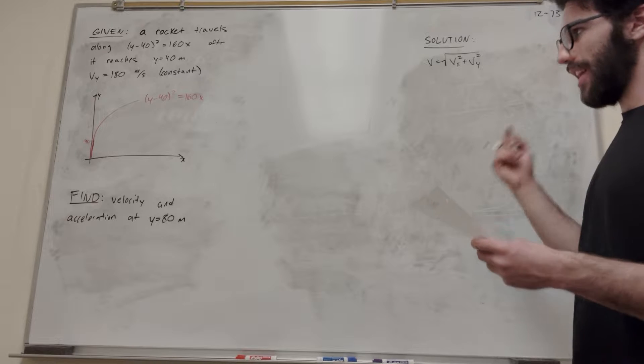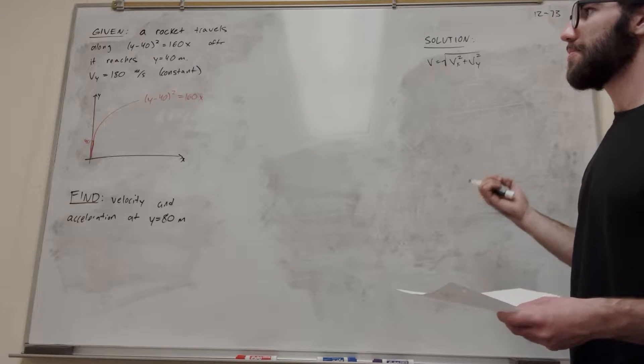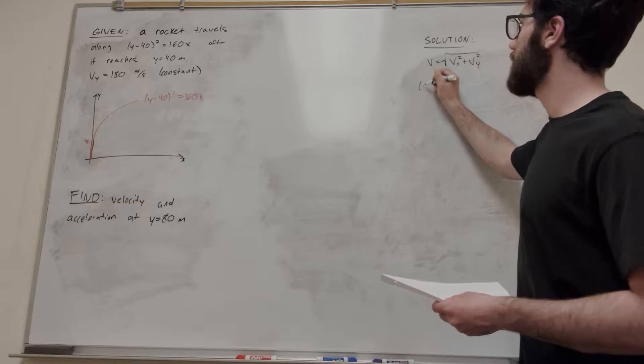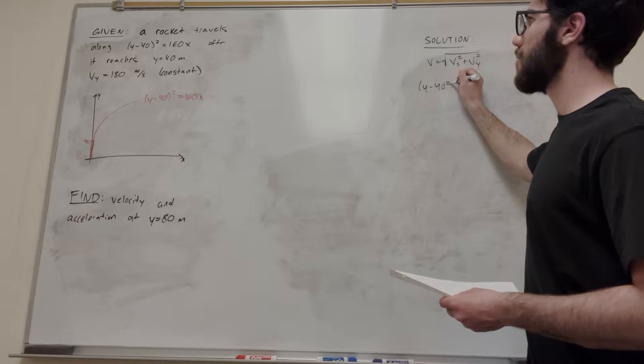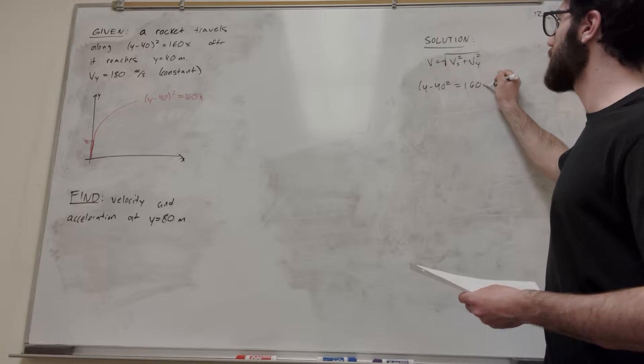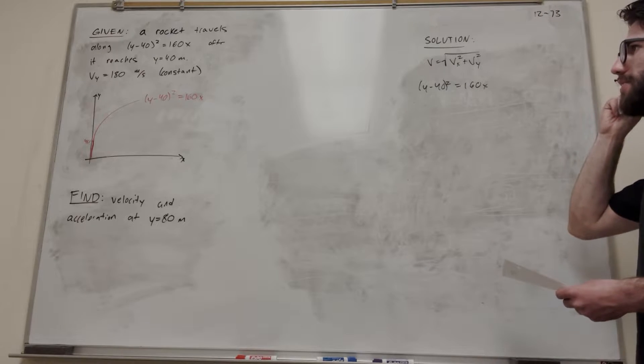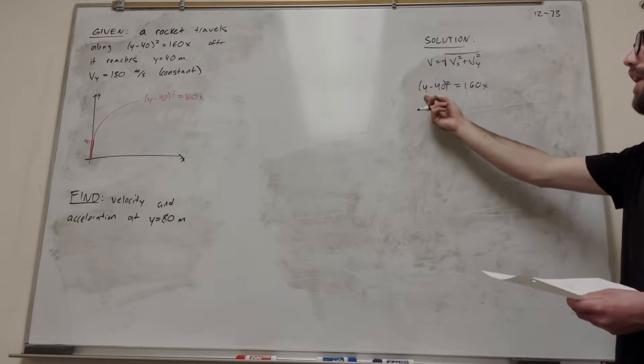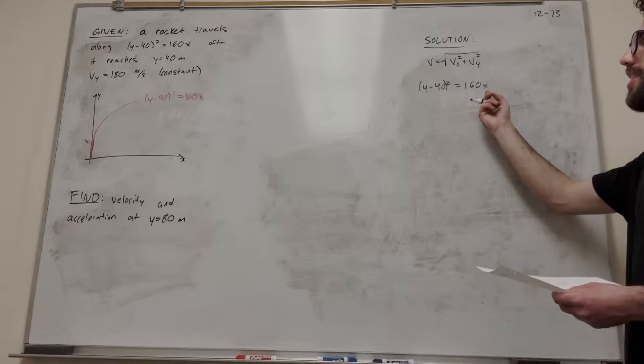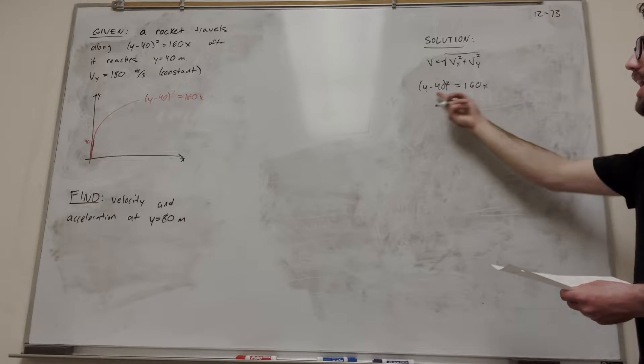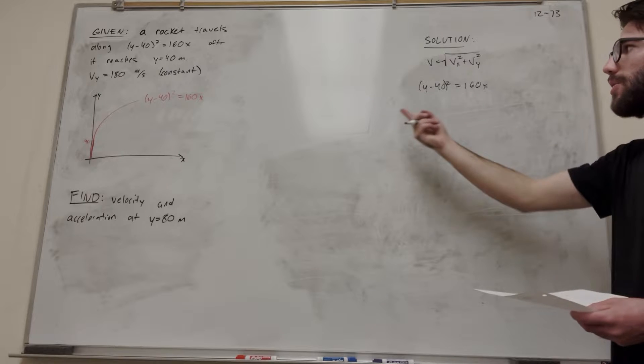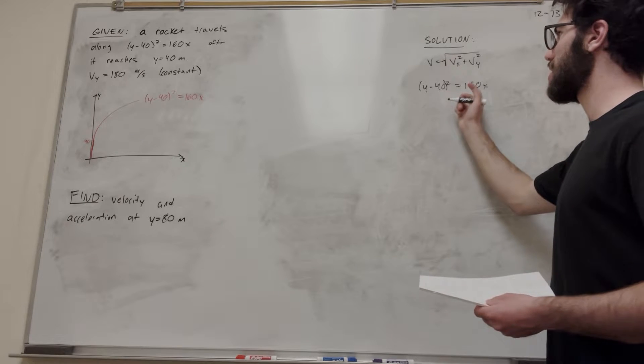Let's go ahead and solve for those. How are we going to do that? We're going to take some derivatives. First of all, let's start with our equation: y minus 40 squared equals 160x. So what happens if we take a time derivative of this? We'll have y dot and x dot. We're solving for x dot because x dot is velocity x, and we have y dot which is 180. So let's take the time derivative of both sides.